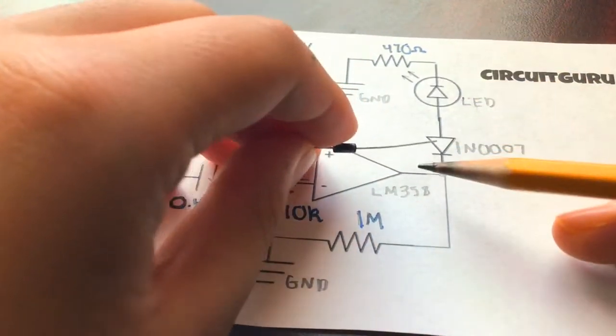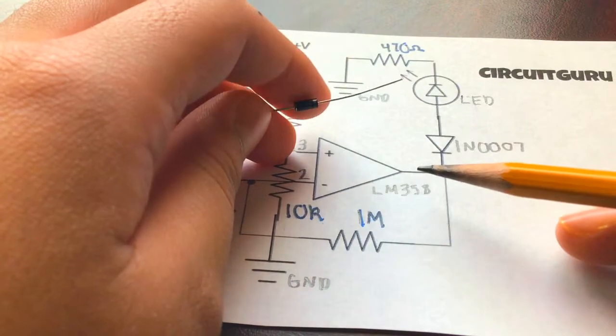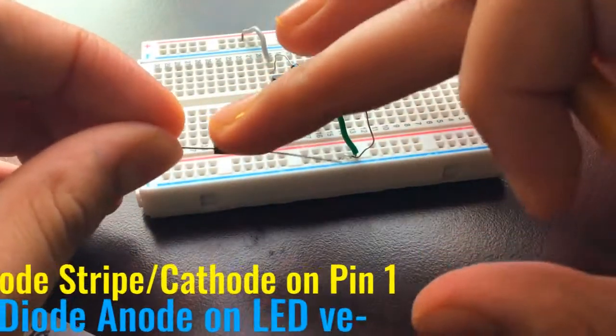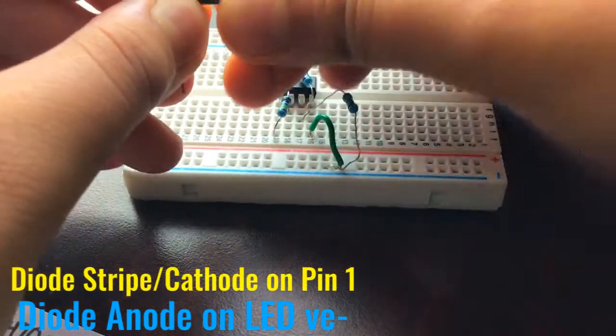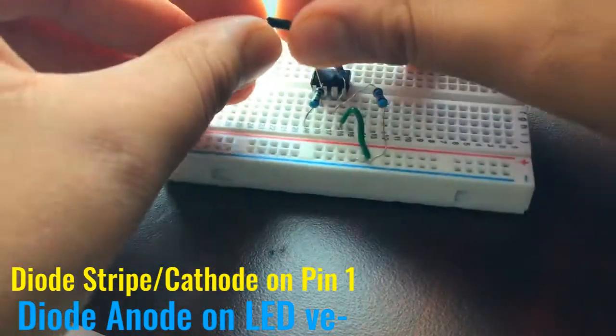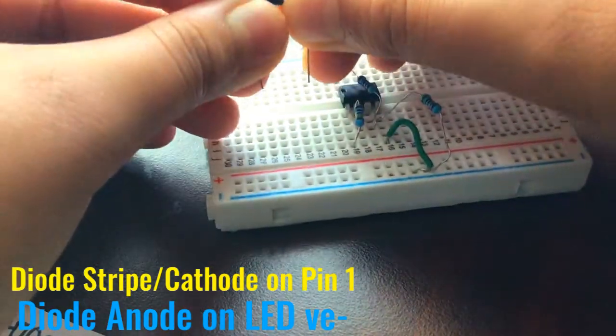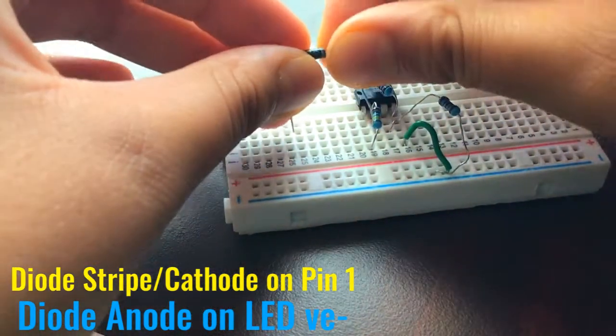We're going to place this cathode facing the output. The cathode is this little line right there. We're going to place the cathode on the output and its anode out in the distance so you can connect it to an LED.